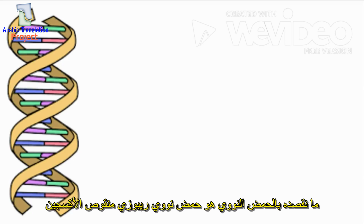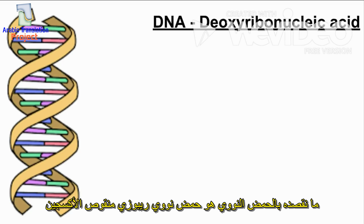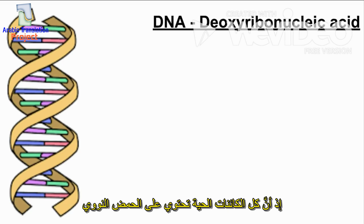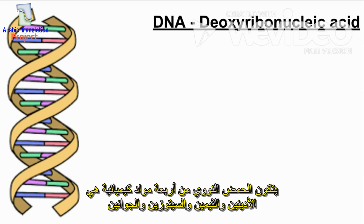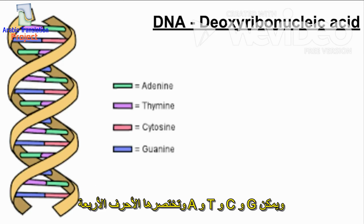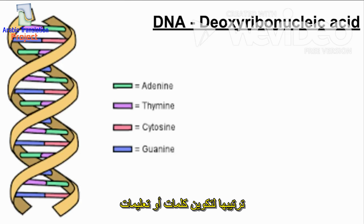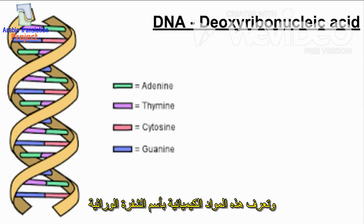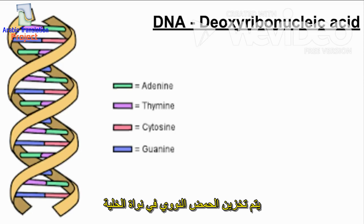DNA stands for Deoxyribonucleic Acid. Every living organism contains DNA. DNA is made up of four chemicals: adenine, thymine, cytosine, and guanine. The four letters A, T, C, and G can be arranged to make words or instructions. This is known as the genetic code.